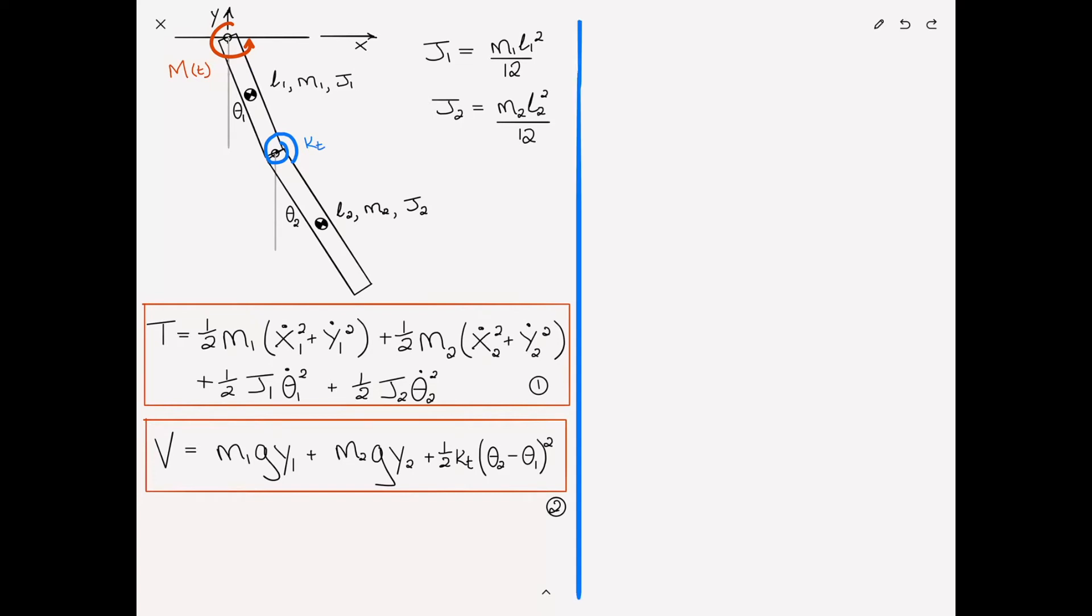In all of these problems, the idea is we've got to find the kinetic and potential energy, and we proceed using what I would refer to as the kinematics, where we're actually applying the constraints of this problem. What does that mean in English? That means we locate the center of gravity of each of the masses.